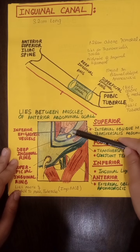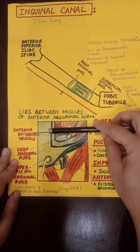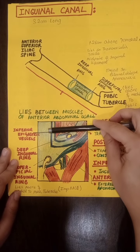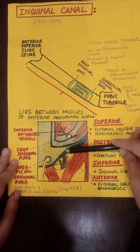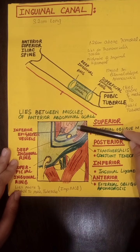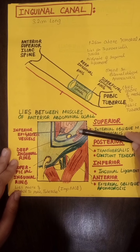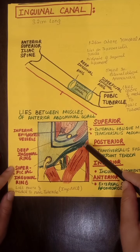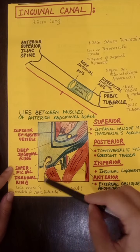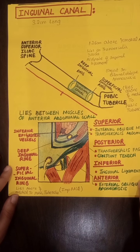To summarize the inguinal canal boundaries: anteriorly is the external oblique aponeurosis; inferiorly is the inguinal ligament; posteriorly is the transversalis fascia and conjoined tendon; the roof is formed by the transversalis abdominis muscle and the internal oblique muscle. And the superficial inguinal ring lies above and medial to the pubic tubercle — a very important MCQ point.